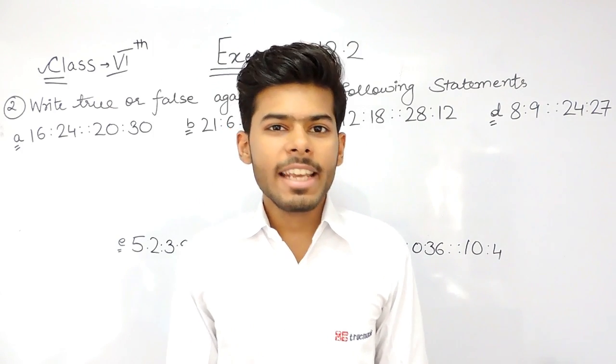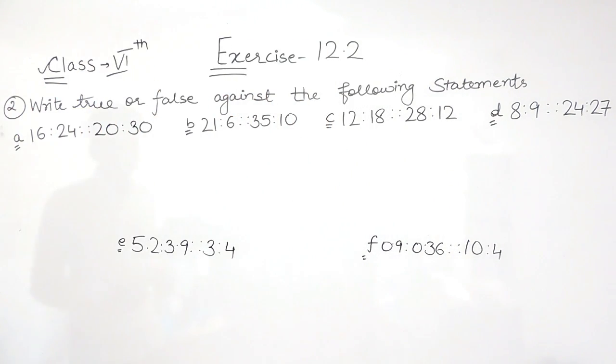Hello everyone, this is the second question of exercise 12.2. In this question we have to write whether these statements are true or false. These six parts that have been given to us are in proportion. So we have to check whether they are actually in proportion or not.